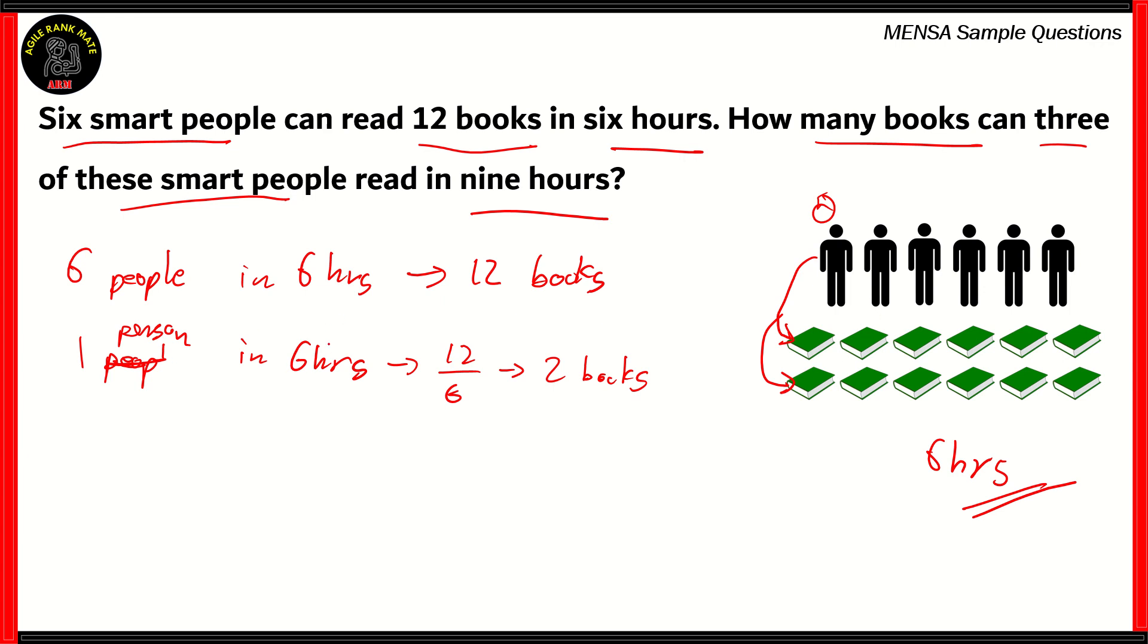Now we would need to find out how much a person reads in an hour. So when we divide the number of people, you get one person in six hours reads 12 by six, which is two books. So if you are looking at one person, one person would deal with two books during the six hours time period. Now if we were to find out how much that person reads in an hour, one person in one hour would read two over six, which is one by three books. So one person would read a third of a book in one hour. Now this is the rate of the work done here.